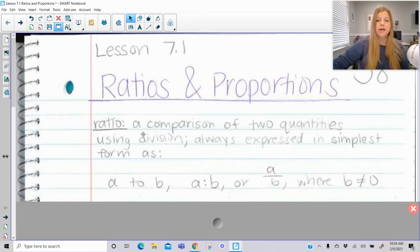First of all, a ratio is a comparison of two quantities using division, always expressed in simplest form as either A to B, using the word 'to', A to B using a colon in between the two values, or A over B, where B is never equal to 0 because we can't divide by 0.